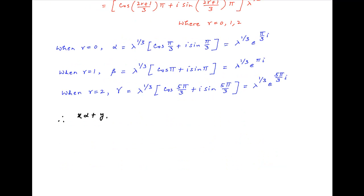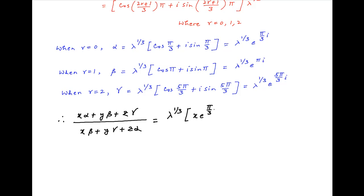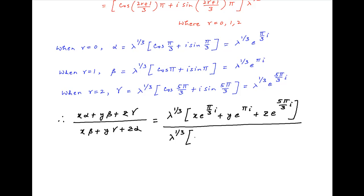Therefore the value of the expression (xα + yβ + zγ) / (xβ + yγ + zα) is equal to λ^(1/3) times (x · e^(πi/3) + y · e^(πi) + z · ...) divided by a similar expression. The factor λ^(1/3) cancels across the numerator and the denominator.